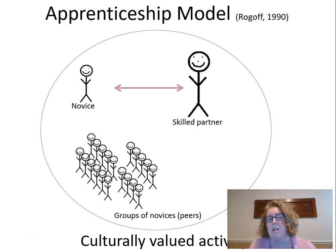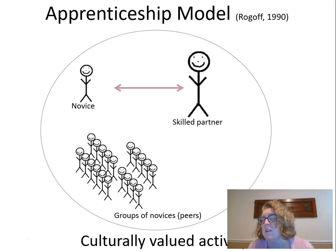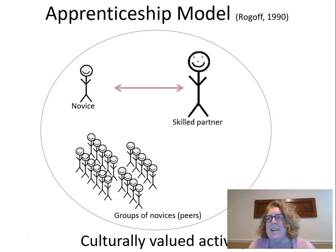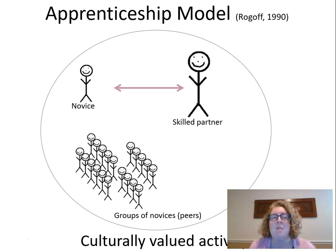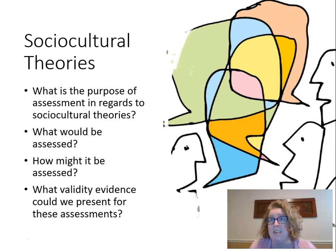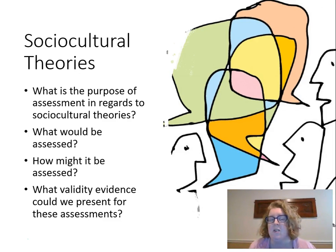We use this apprenticeship model in learning how to read: as a teacher I say 'these are the things that readers do — we start at the top of the page, read left to right, look at pictures for context clues, start with the first sound of a word.' Or I might say 'this is what scientists do in a lab' or 'this is what a mathematician does when solving a problem.' We use the apprenticeship model a lot in our classrooms. If I'm thinking about it as an assessment tool, I'm really thinking about how to use authentic assessments that think about real-world skills and culturally valued activities.